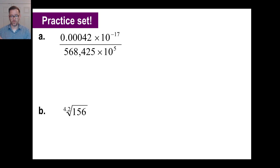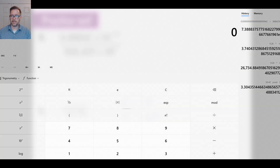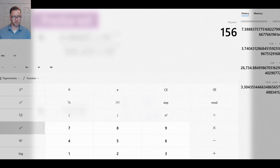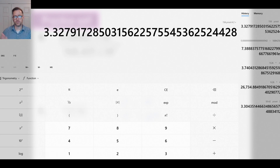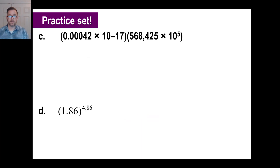For practice problem (b): the fourth root of 156. Estimate first — 3 to the 4th power is 81, and 4 to the 4th power is 4×4×4×4 = 16×16 = 256 — so the answer is between 3 and 4. On the calculator, enter 156, hit the inverse/root button, enter 4.2 for the root, and hit equals. The answer is about 3.33.